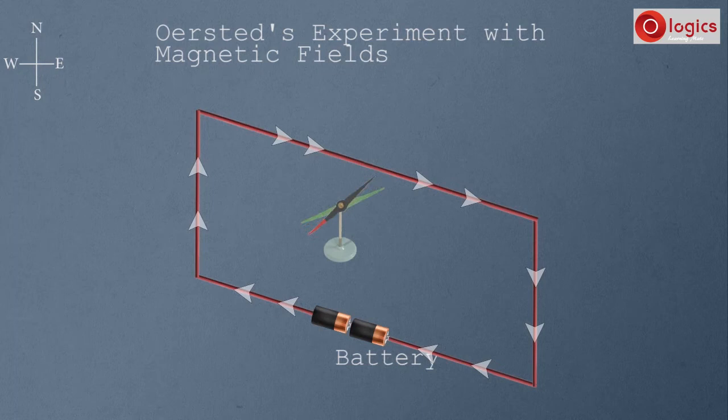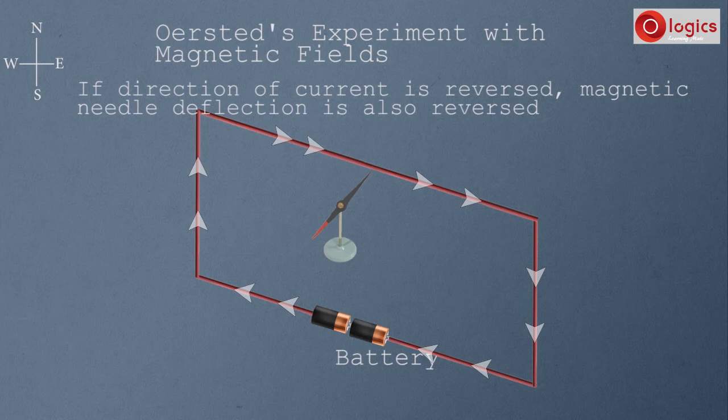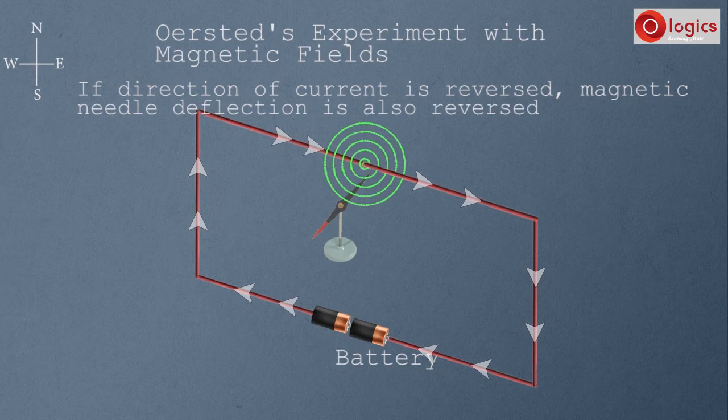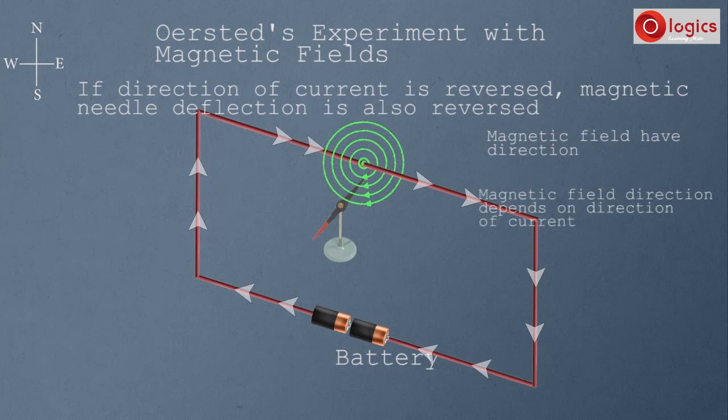The observation here is that if the direction of current is reversed, the magnetic needle deflection is also reversed. This is explained by the fact that the magnetic field has a direction, and this field's direction depends on the direction of current. The magnetic needle deflects to align itself in the direction of the magnetic field.